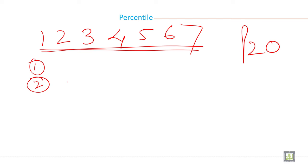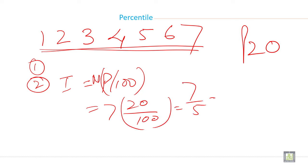The second step is calculate i. So i is equal to n times p by 100. Your n is 7, your p is 20 divided by 100. So it is 7 by 5. When you solve this you will get 1.4. So your i is 1.4.